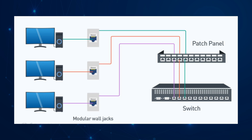Here is how a patch panel is used in a network. Three machines are each connected to the network with an ethernet cable that connects to an ethernet wall jack. Each wall jack has a cable running through the walls or ceilings to the back of the patch panel where it is punched down or terminated, activating the corresponding port on the front. A short patch cable then connects that port to the switch. This helps with cable management and prevents wear and tear on the cables running throughout the building.